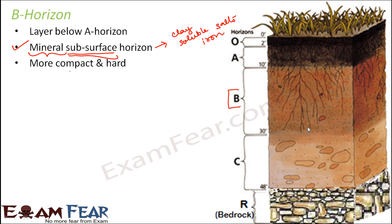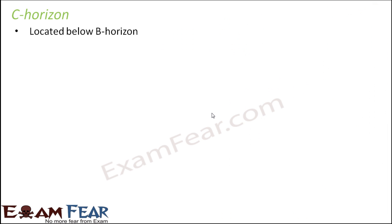Notice that as we go deeper, the hardness of the layer increases. For example, the A horizon is quite soft and has pores. Next is B, which is hard and compact. And now the next is the C horizon. The C horizon is located even below the B horizon — it is hard, quite hard. Even when you compare it with B, it is harder than the B horizon.